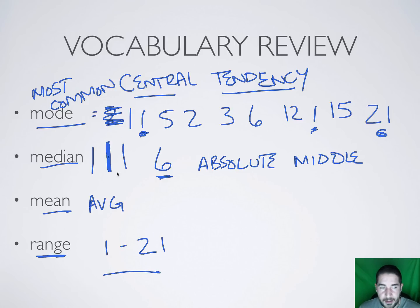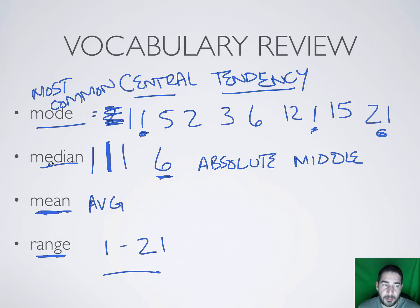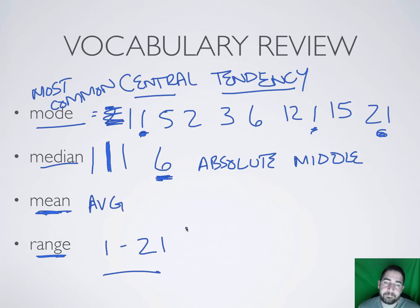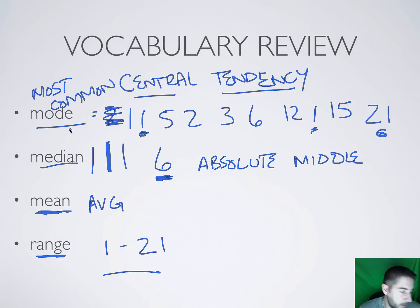So all of these — mean, median, and mode — are measures of central tendency pointing to what the middle number is. The mean gives you an idea of what the middle is; the median tells you exactly what the middle number is, though it doesn't necessarily tell you if that middle number is important for your specific question. The mode is simply the most common answer.